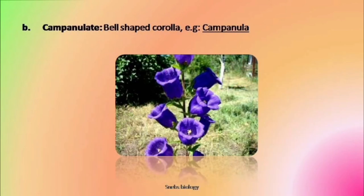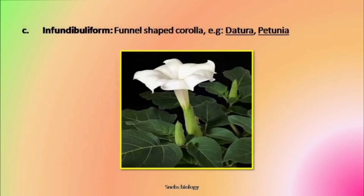The next type is campanulate — here the corolla is bell-shaped, which is found in Campanula. The third one is infundibuliform or funnel-like. Again petals are fused but instead of a tube-like structure, it makes a funnel-like structure. This type of corolla is found in Datura.